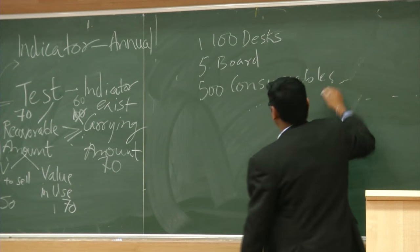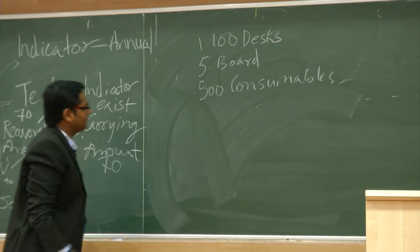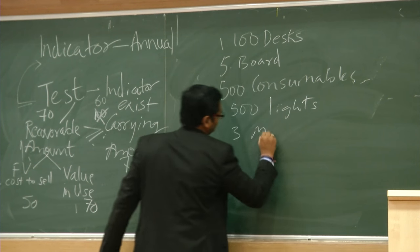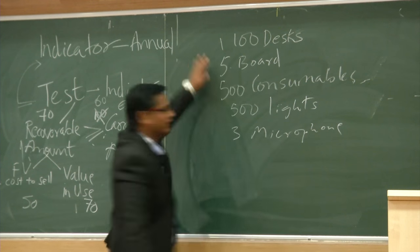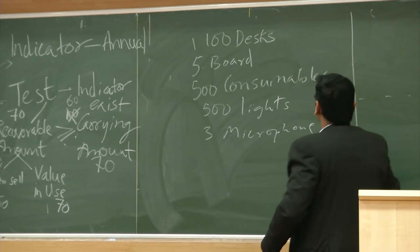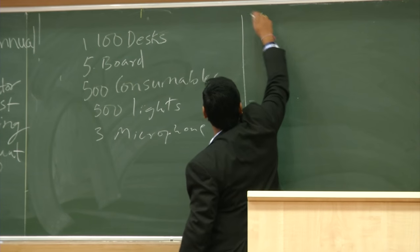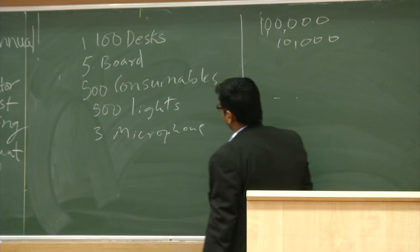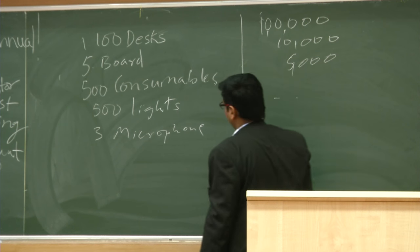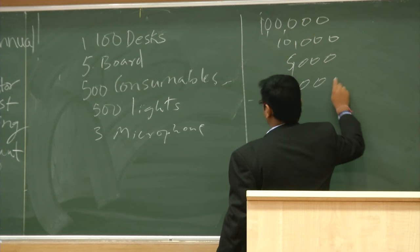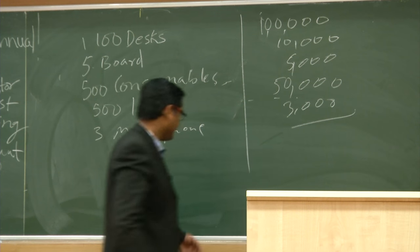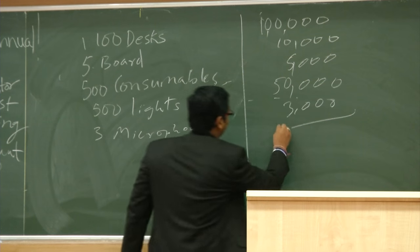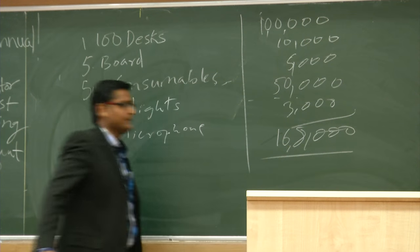The classroom contains: 100 desks with carrying amount of 1,00,000 rupees; 5 boards at 10,000 rupees; 500 consumables at 5,000 rupees; 500 lights at 50,000 rupees; and 3 microphones at 3,000 rupees. So the total carrying amount of the cash generating unit is 1,68,000 rupees. Now, suppose 15 desks out of 100 have caught fire and been damaged.